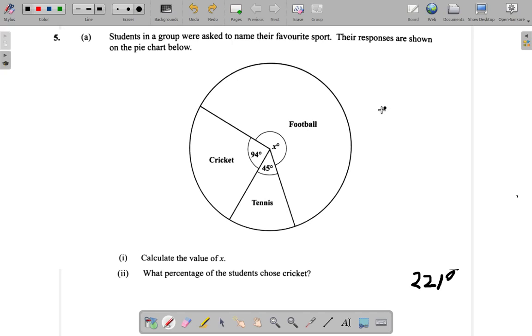Now you know percent means out of 100. Now this fraction is out of 360. So this is 94 out of 360. And when you get that number, in order to turn it into percentage, you multiply it by 100.